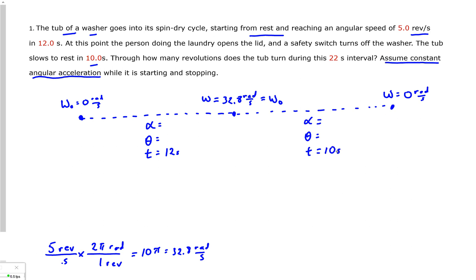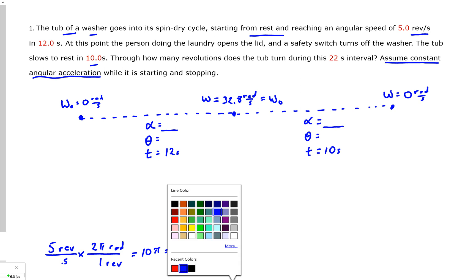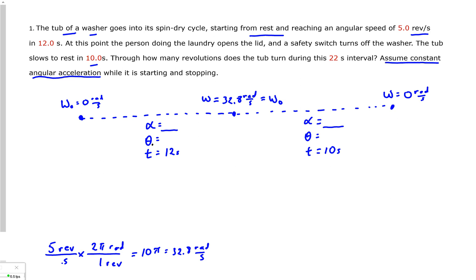Now somebody might be tempted to try and combine all this together. What makes these two parts unique is that the angular acceleration for part one and the angular acceleration for part two are different. So we can't combine. We have to work each part independently. So as we work this problem out, what we're going to have is an angular displacement for part one and then angular displacement for part two, and then we'll have to combine these two angular displacements.